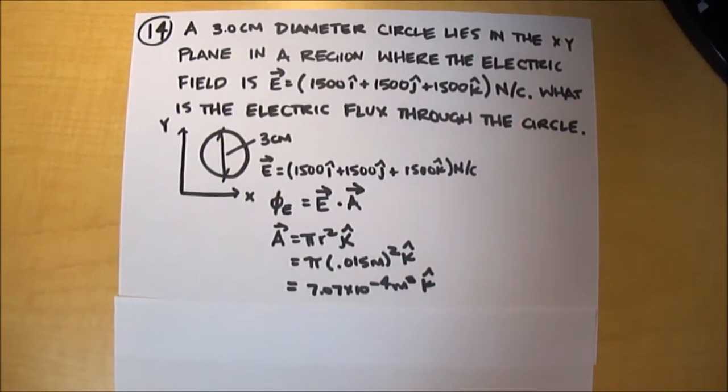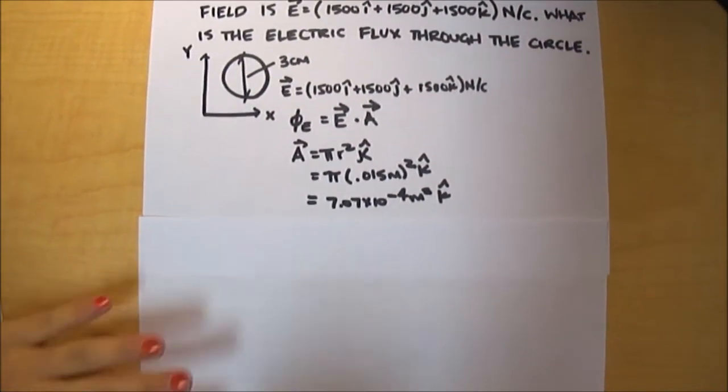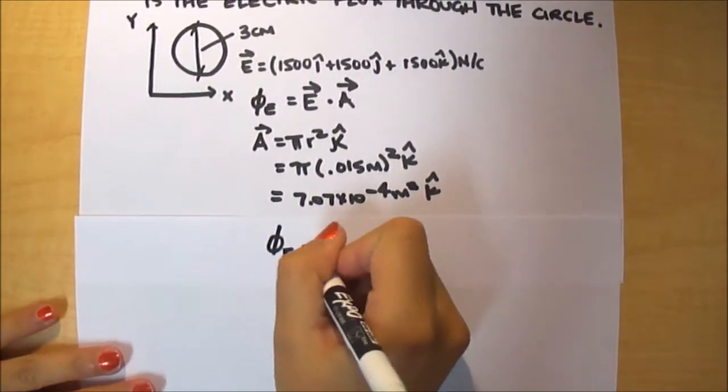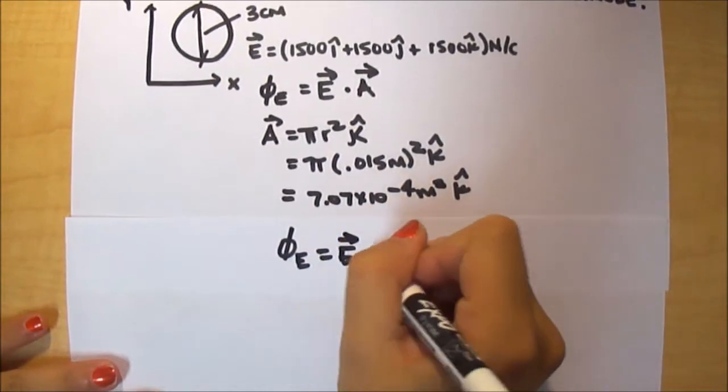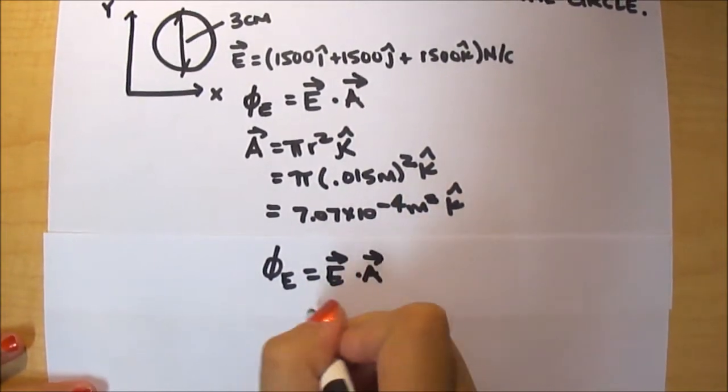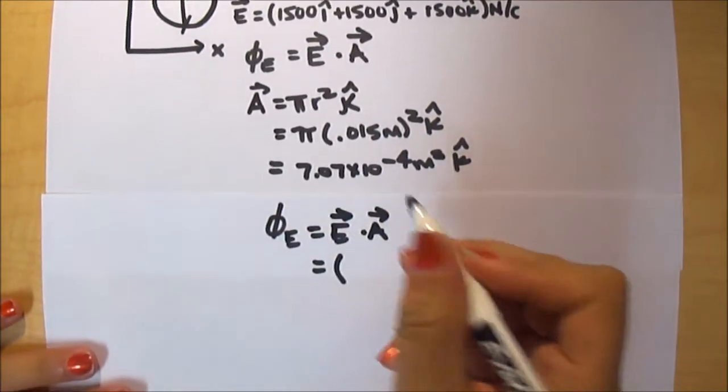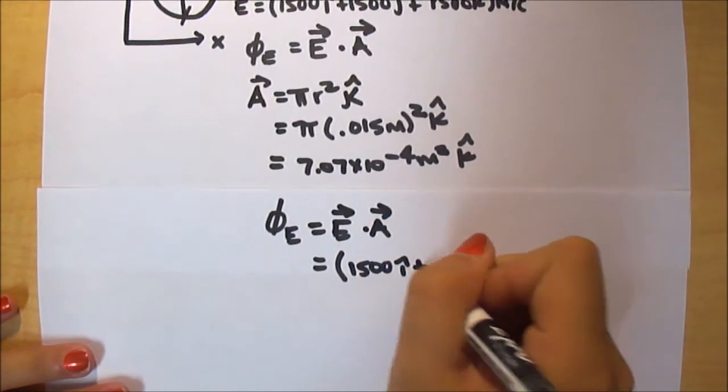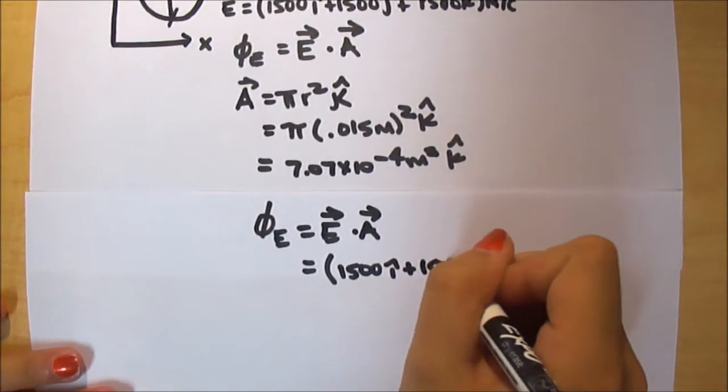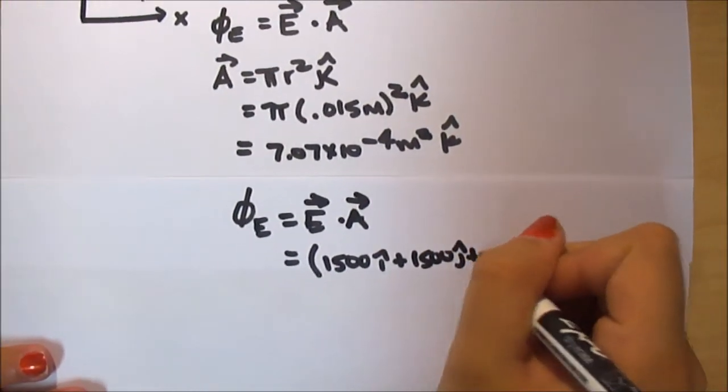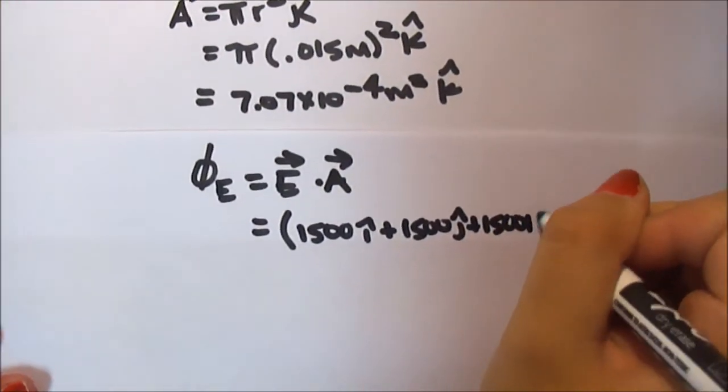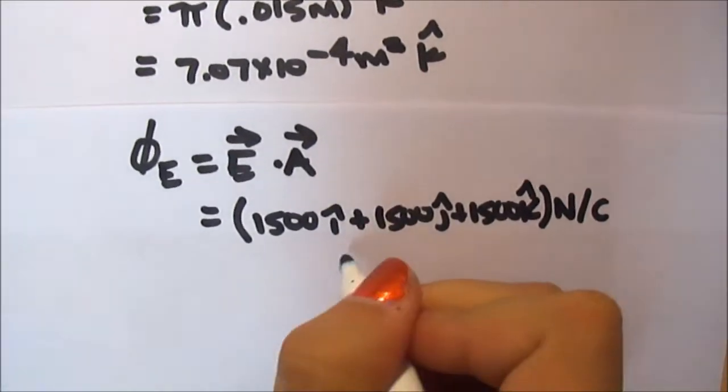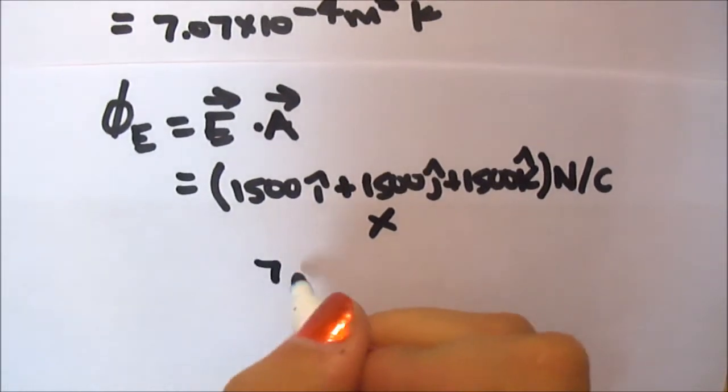Next, we'll plug in the given electric field value and the area vector that we just calculated into our electric flux equation. So it should look something like this, all times what we just calculated.